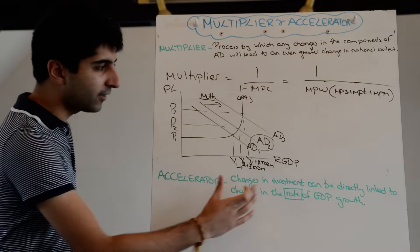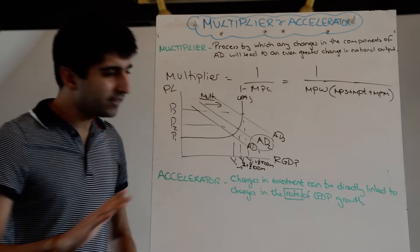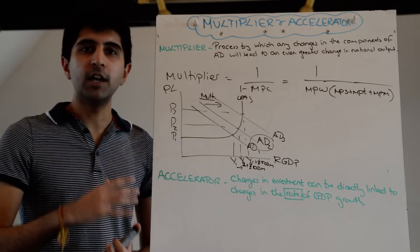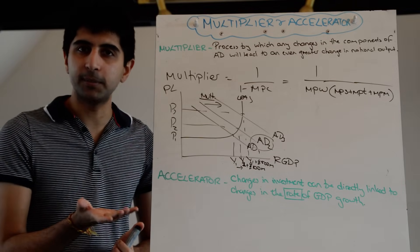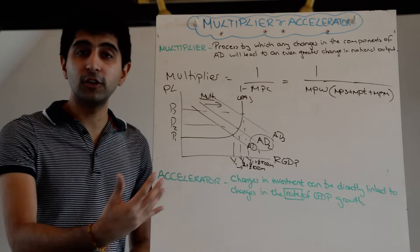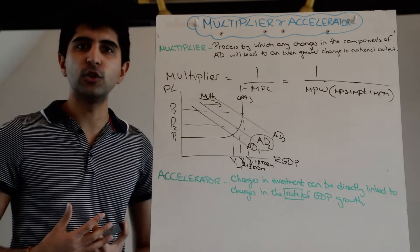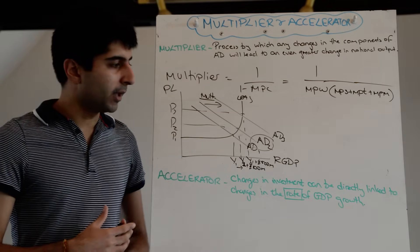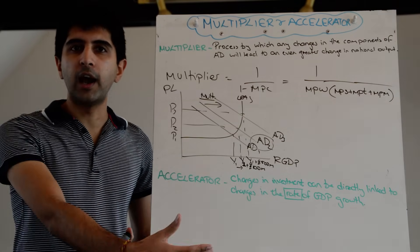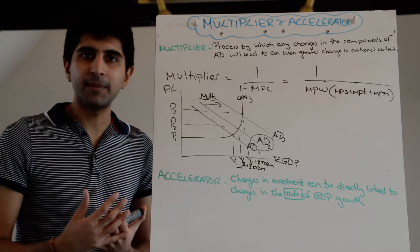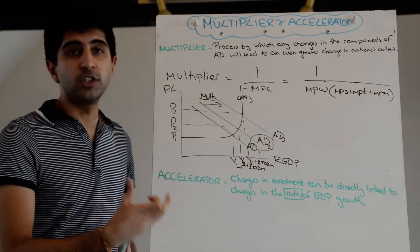The accelerator says that changes in investment can be directly linked to changes in the rate of GDP growth — the keyword there is rate. Very simply, when the rate of GDP growth is actually increasing, then firms are going to be more willing to invest, because firms are bullish — they think that demand and growth will be high in the future, and it's increasing rapidly. Now's a good time to invest in new capital, expand the factory, or invest in new office space, as a direct result of expected future rates of growth.